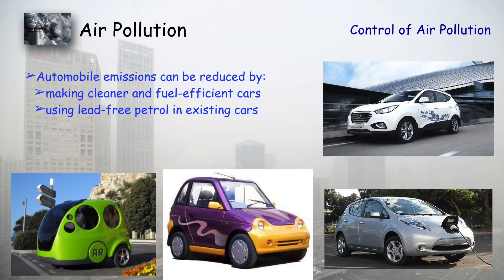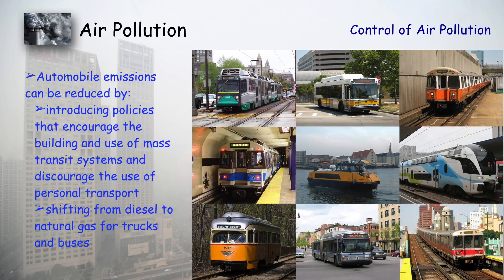How can we avoid air pollution? For automobiles, alternative sources are already available in the market — electric vehicles and fuel cell cars. This Mahindra electric car is suitable for two persons, but bigger cars are also available. Another option is a car that runs on compressed air — we compress air, fill it in a chamber, and when released the car moves forward.